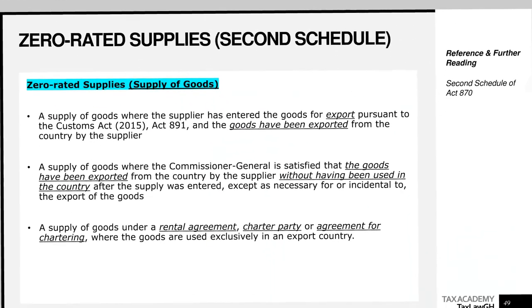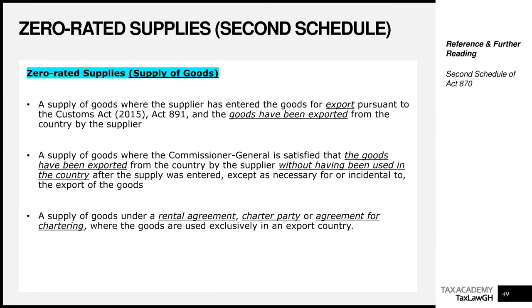Now let's look at what we can find on the second schedule. Things are broken down into two sub-components: supply of goods and supply of services. Anything on the second schedule, remember, is taxable but you apply a rate of 0%.